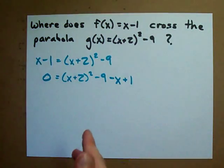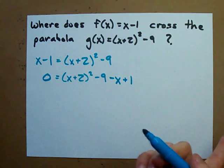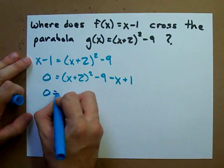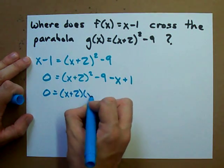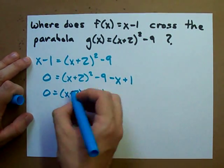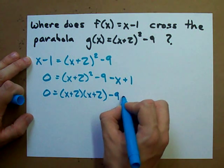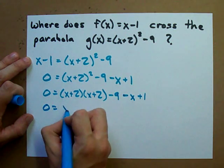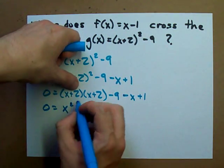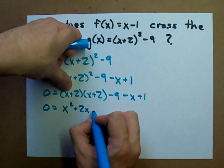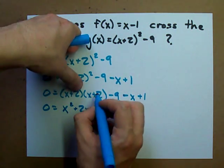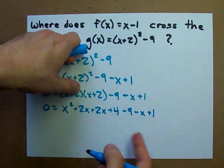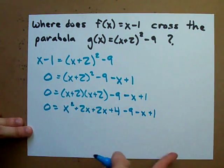FOIL, collect like terms, simplify. Well, we're certainly going to need to do that because this doesn't look too pretty. x plus 2 squared can be rewritten x plus 2, x plus 2, minus 9, minus x plus 1. And I can FOIL this. x squared plus 2x plus another 2x plus 4, minus 9, minus x plus 1. Getting uglier, but now we can collect the like terms.